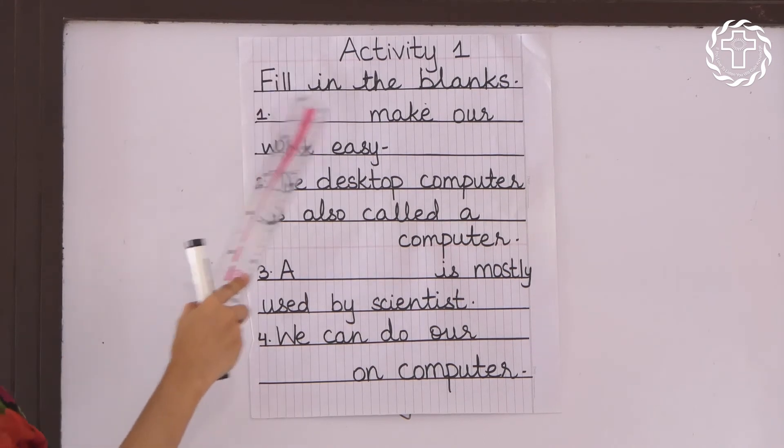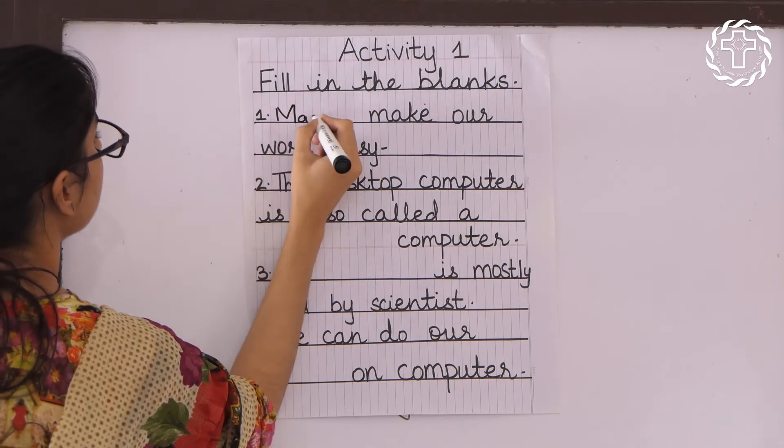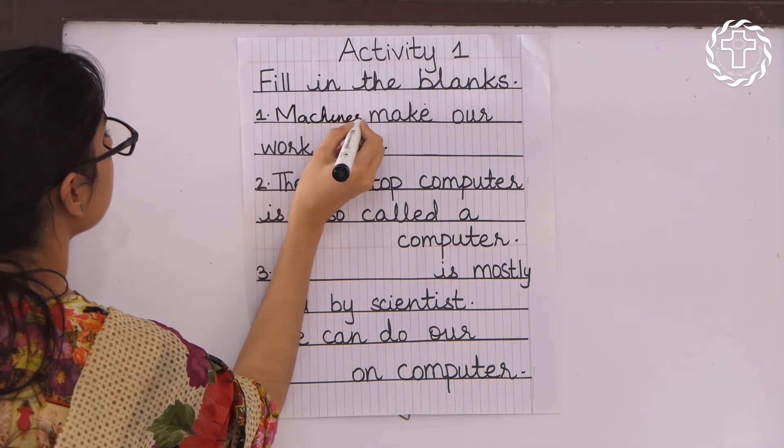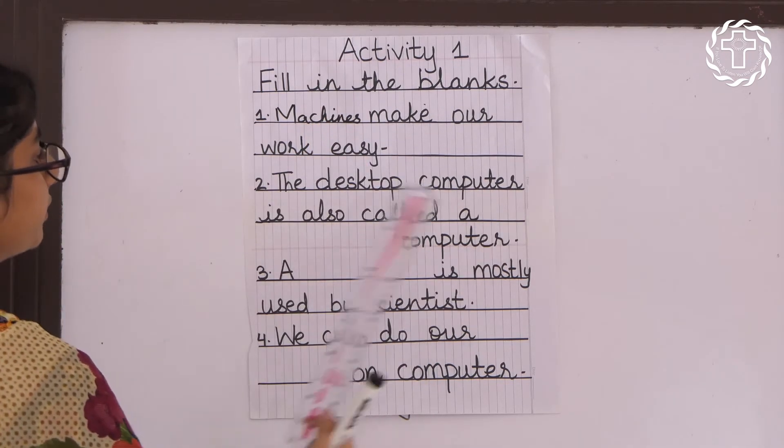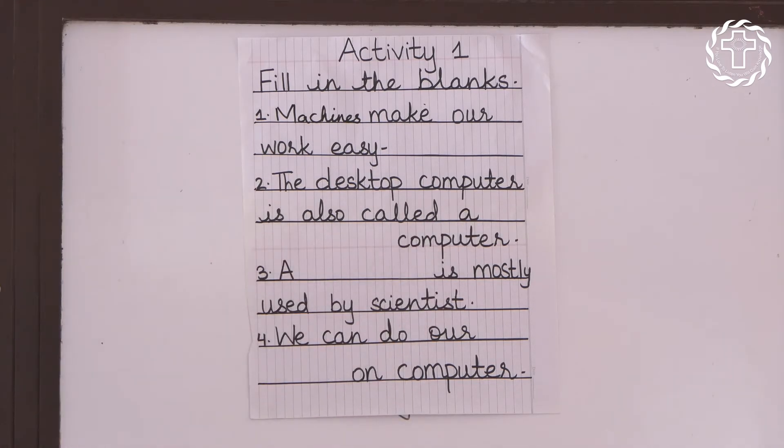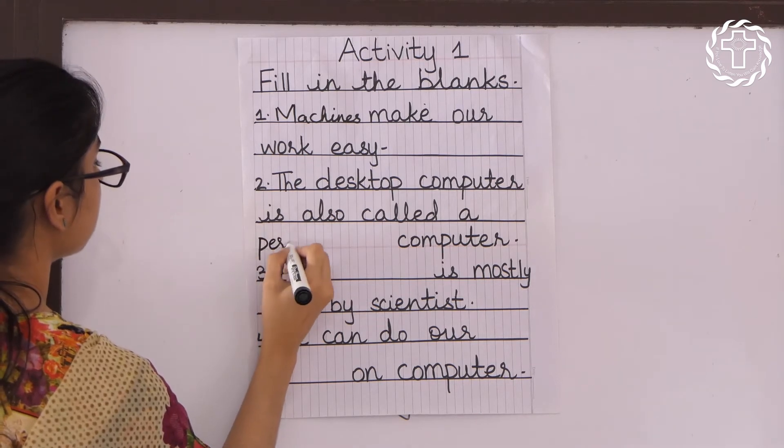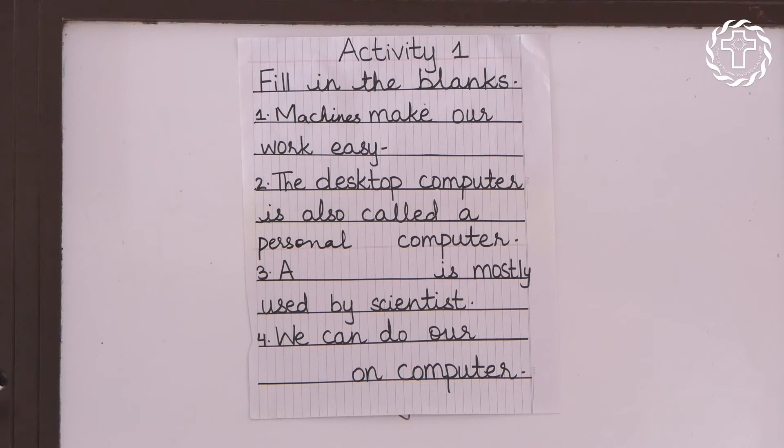First activity: fill in the blanks. You have to do it in your home book copies. Number one: blank makes our work easy. Answer: machines. Number two: the desktop computer is also called a blank computer. Answer: personal.